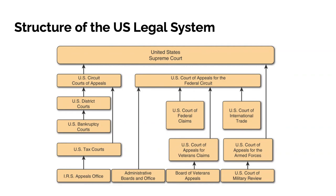And then of course we have the Supreme Court. The President is responsible for appointing federal judges, approved by the Senate. It is for life unless removed by impeachment. The Judiciary Branch is the ultimate arbiter of the law, not Congress or the President. Article 2 of the Constitution outlines the jurisdiction of the Supreme Court and other federal courts.